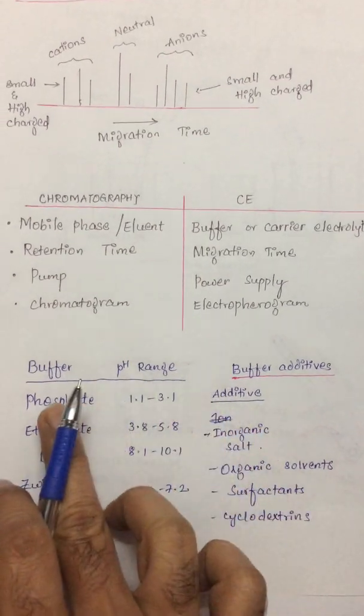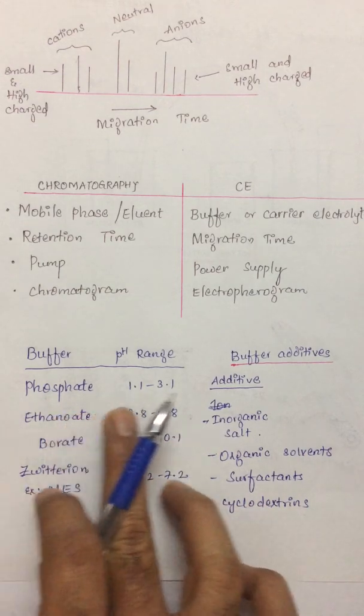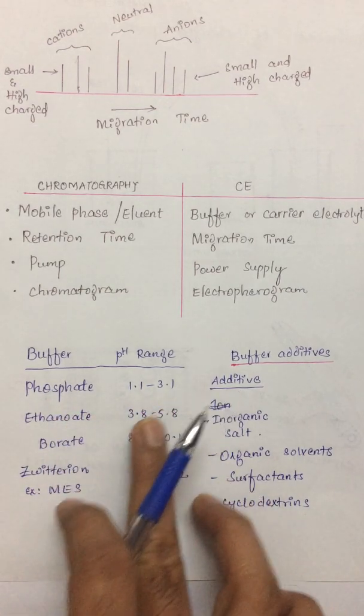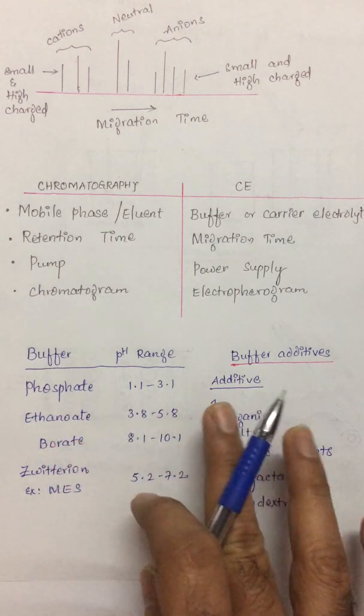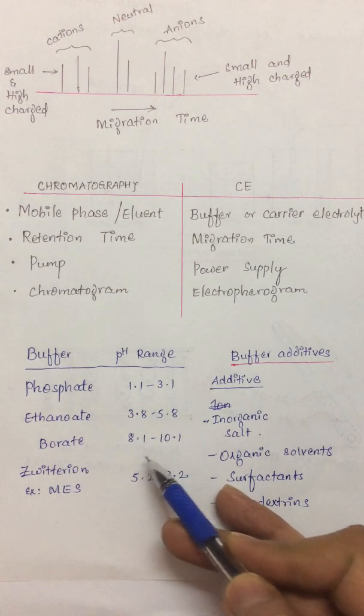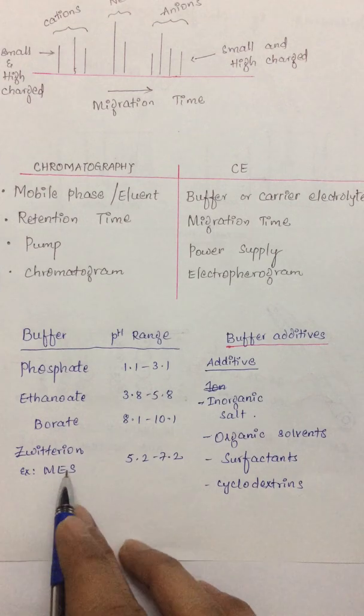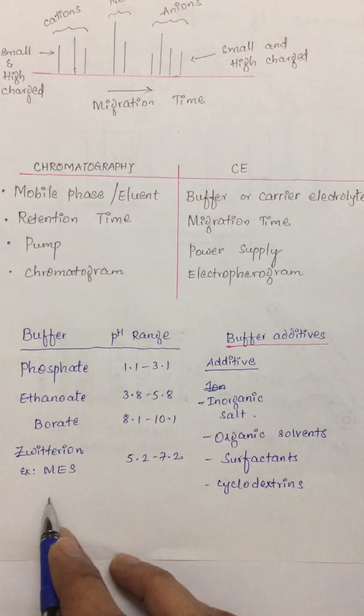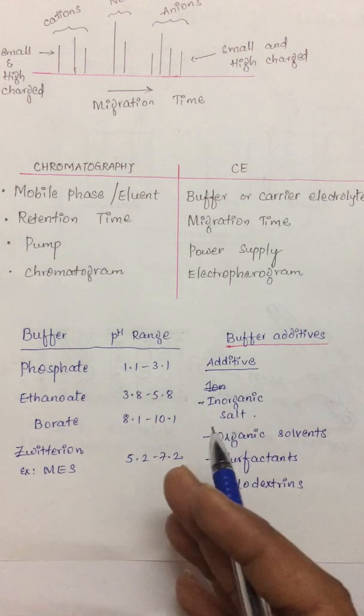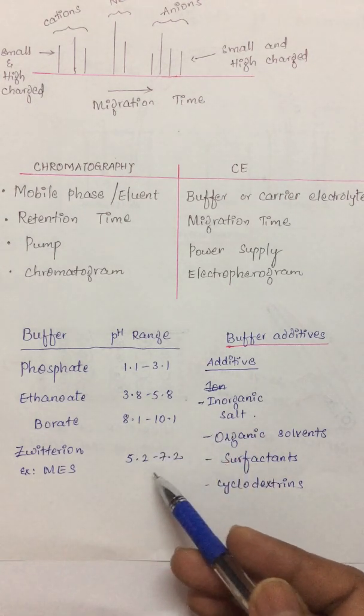The buffers that we have discussed, some ranges have been given. The phosphate buffer has the least pH range from 1.1 to 3.1. Acetate buffer is in between whereas the borate buffer is at a higher range from 8.1 to 10.1. Apart from these buffers even zwitterionic buffers can be used. One example is MES, 2,4 morpholine ethane sulfonic acid. Its pH range is around 5.2 to 7.2.